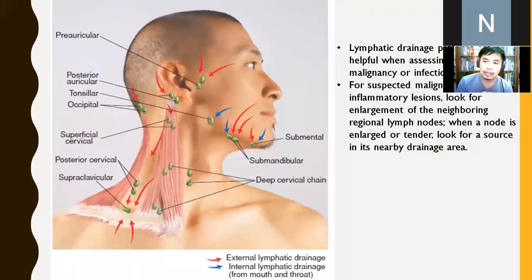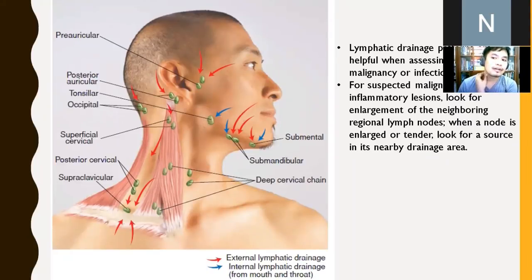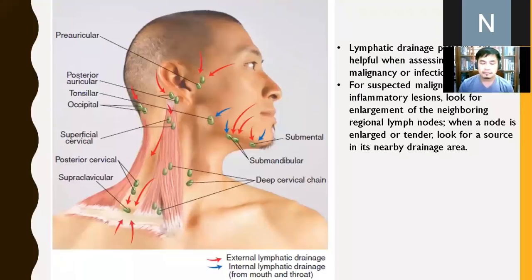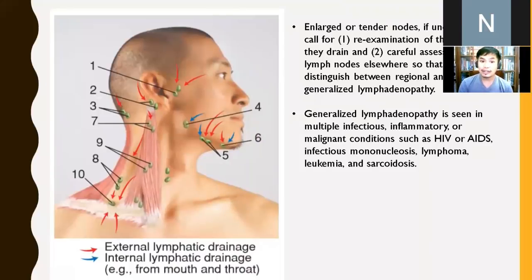Study about lymphadenopathies. Palpate preauricular, postauricular, submandibular, and supraclavicular lymph nodes. Also palpate the trachea — is it at the midline? If not midline, something is pushing it to the side, possibly a mass growing on one side or a pulmonary problem. Inspect and palpate the thyroid gland at rest and during swallowing, and palpate the trachea for midline position.